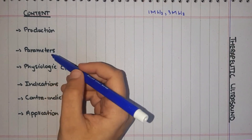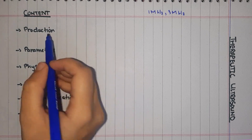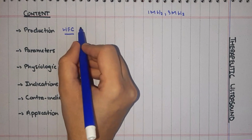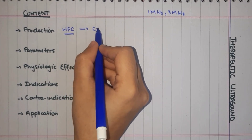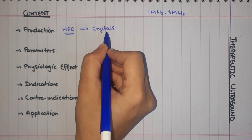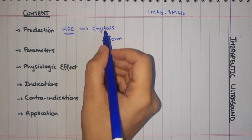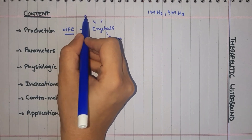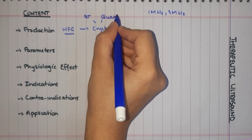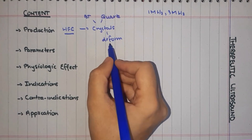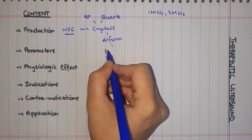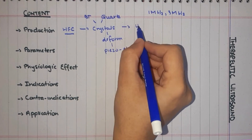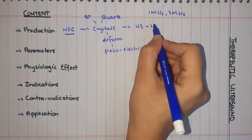First we review the production of ultrasound. We have a high-frequency current applied to the head of the ultrasound, which causes the crystals to deform. These crystals are either quartz crystals or barium titanate. The crystal deforms — meaning its shape changes — and this process is called the piezoelectric effect. As a result, the ultrasound beam is produced in a linear fashion.